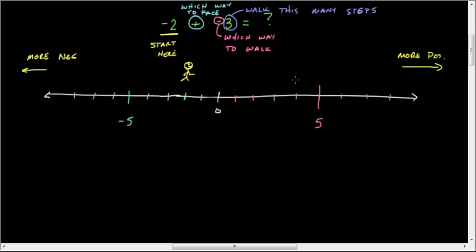Negative 2, that's our start point. We're facing towards the positive, and we are going to walk towards the negative. So let's draw our little man walking here. We've got 1 step, 2 steps, 3 steps.